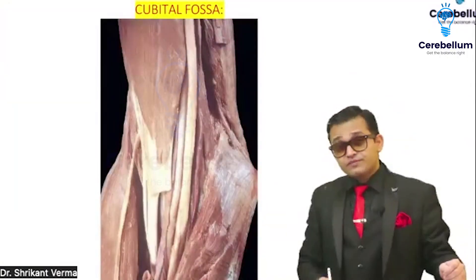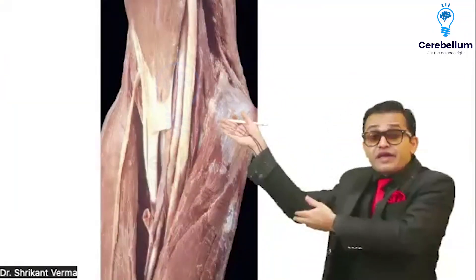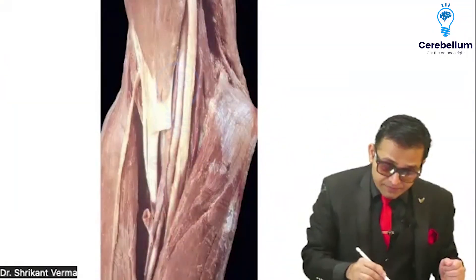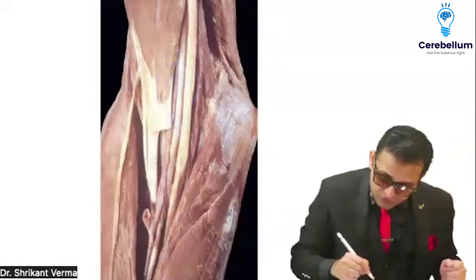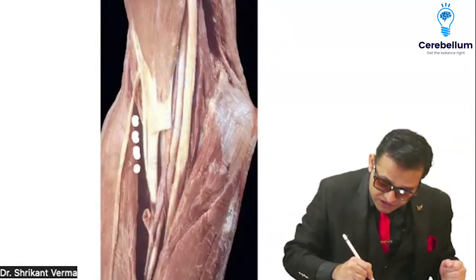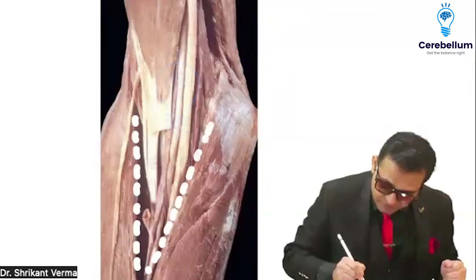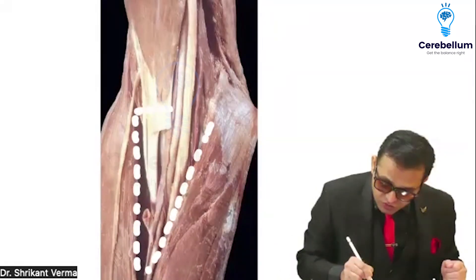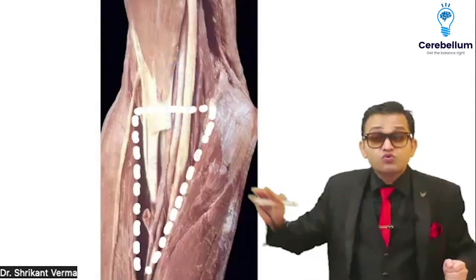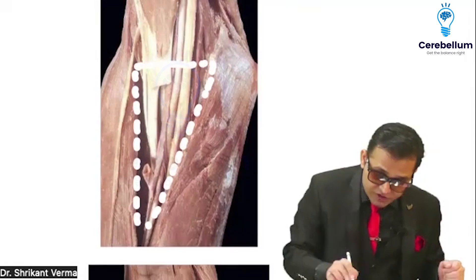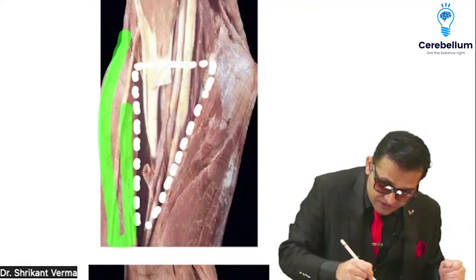The cubital fossa — in front of the elbow there is a triangular muscular depression. Can you see this triangular muscular depression? This triangular muscular depression is known as the cubital fossa. Can you observe the lateral boundaries?